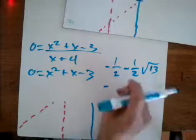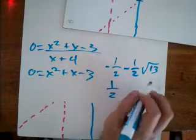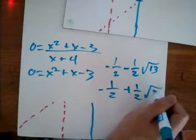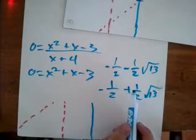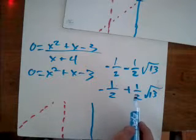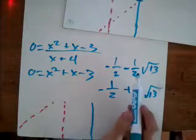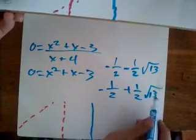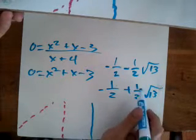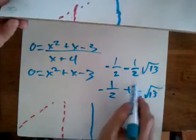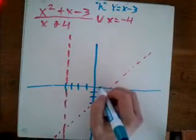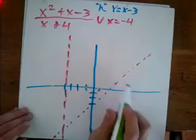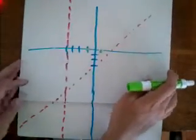I apologize — I thought this would be a nicer example. The other root is negative one-half plus one-half times the square root of 13. The square root of 13 is a little more than 4, so half of that is about 2. So one root gives a positive number and the other gives a negative number — both close to the origin. So our x-intercepts are somewhere in here.